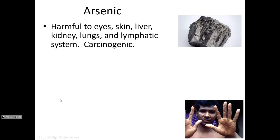Arsenic is probably the most dangerous chemical that is routinely removed from water, and it's naturally occurring. It's a naturally occurring element that can get dissolved into water based on the source. If it's a groundwater source in a place that has lots of arsenic in the soil and underground environment, then it'll get dissolved into the water.